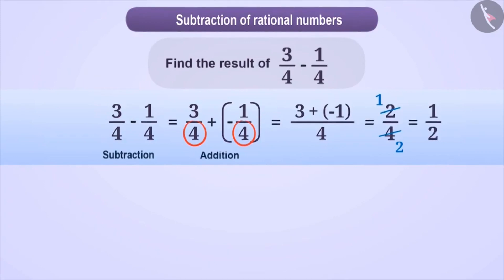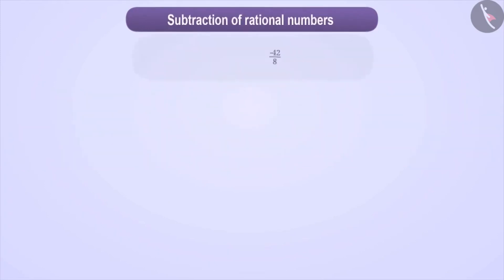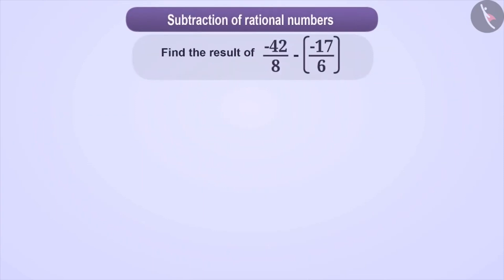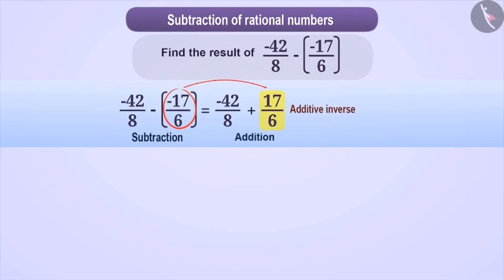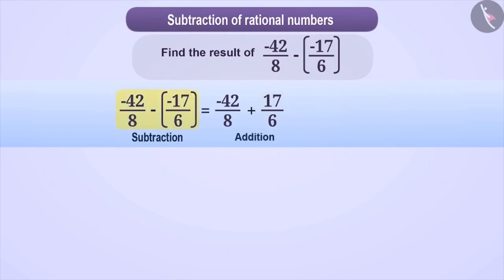Now let's understand it with another example. Suppose we have to find the result of minus 42/8 minus minus 17/6. First, we convert the operation of subtraction into addition. We write the first number as it is, then change the sign of subtraction to addition, and write the additive inverse of the second number. The additive inverse of minus 17/6 is 17/6. So minus 42/8 minus minus 17/6 equals minus 42/8 plus 17/6.